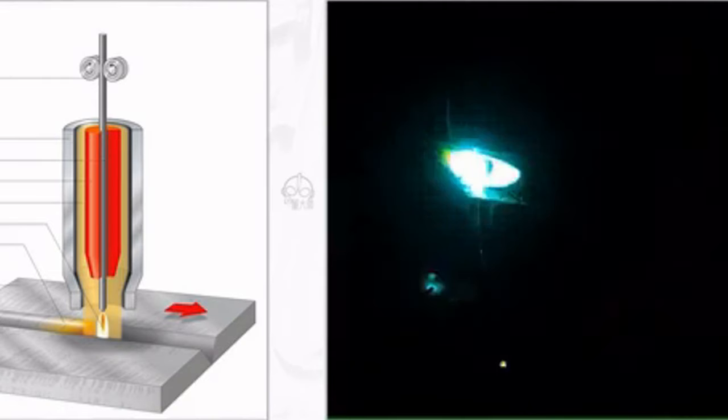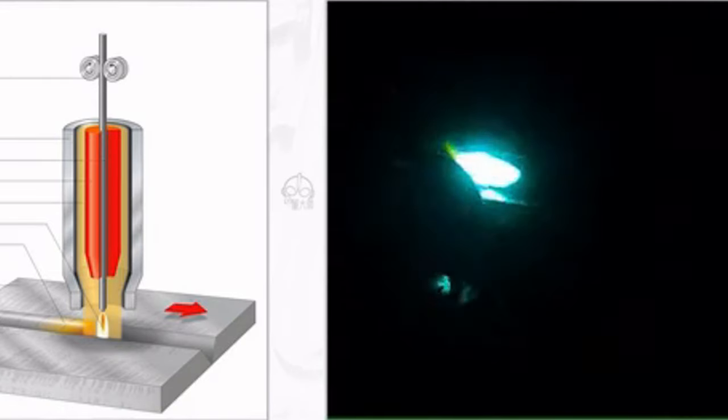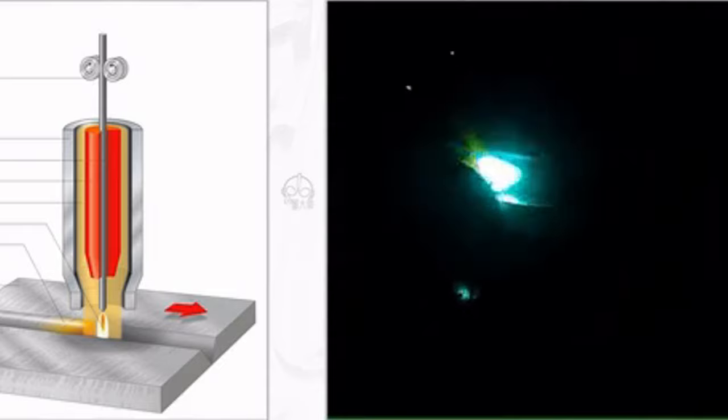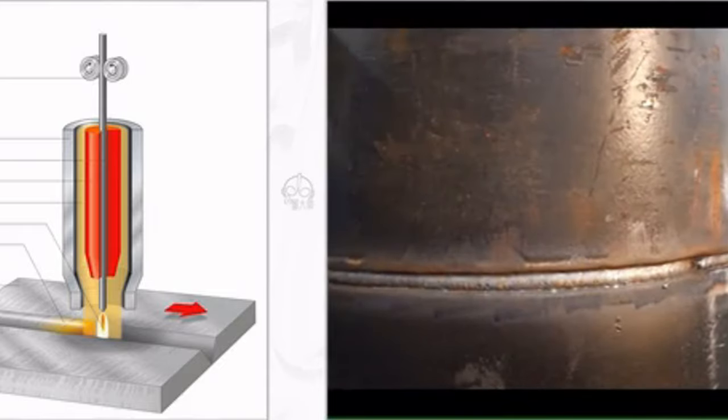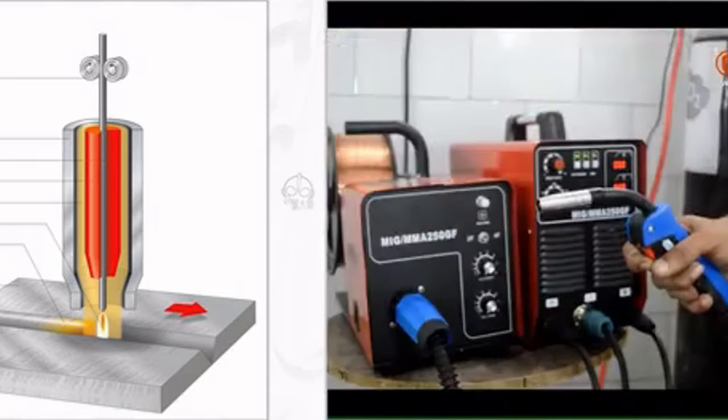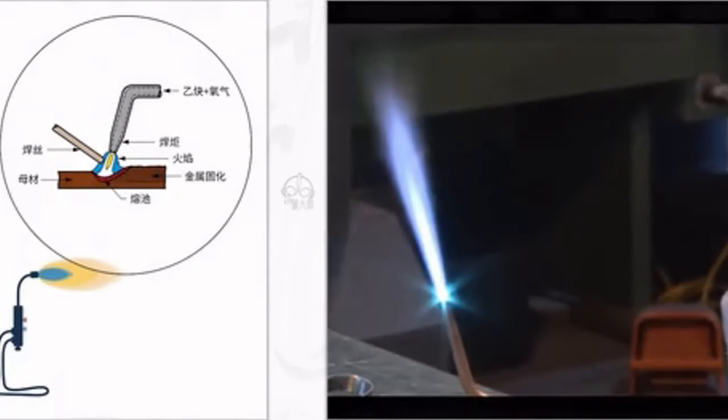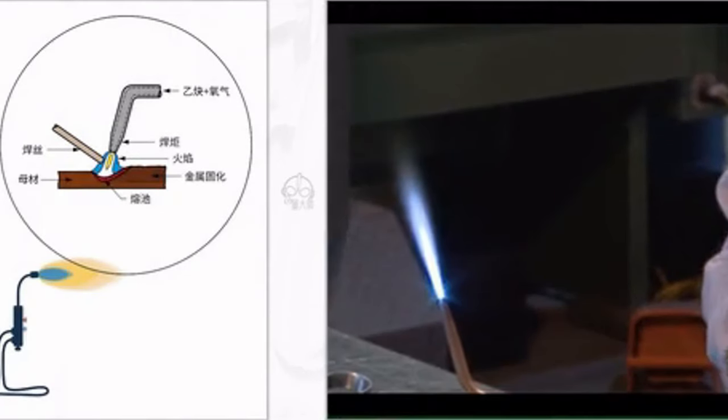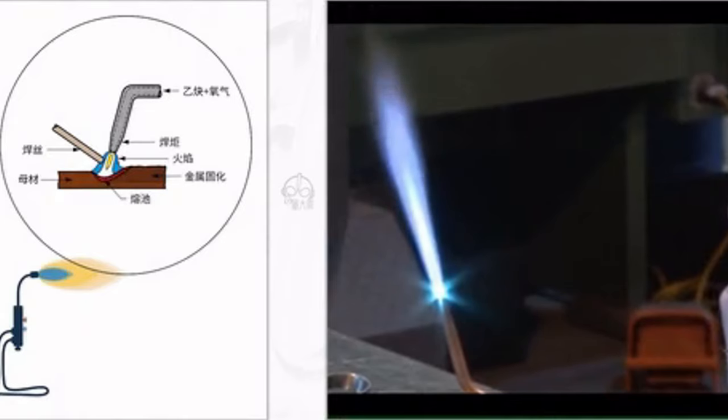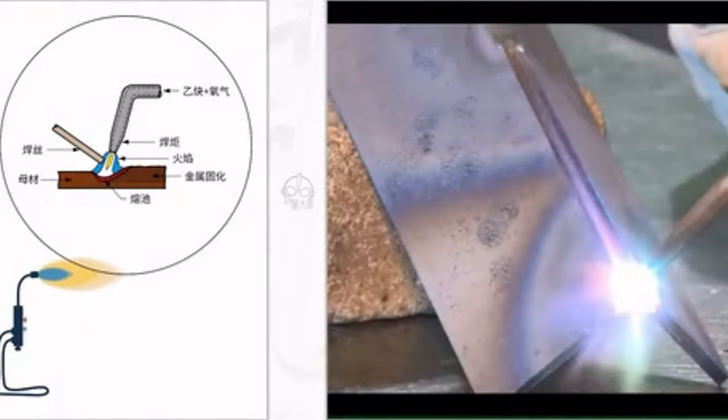If voltage, current, and wire feed speed are mismatched, the weld seam may bend, become uneven and poorly formed. During welding, the arc light is intense, fumes are significant, and metal spatter is abundant and difficult to clean, affecting the weld's appearance.